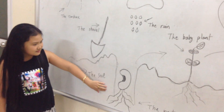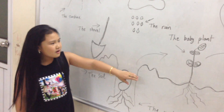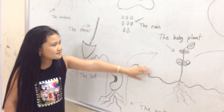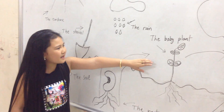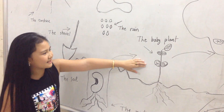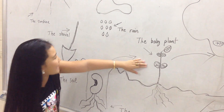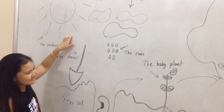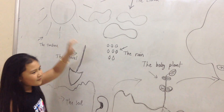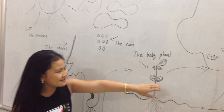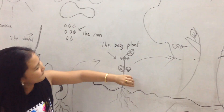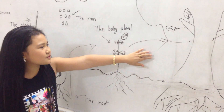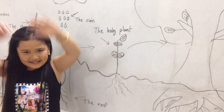Then, the sea rose into the baby plant. The baby plant meets the sunshine. Finally, the baby plant goes into the sun.